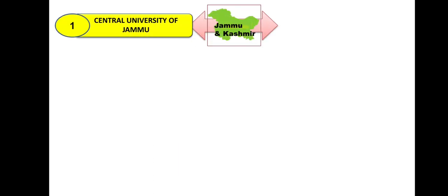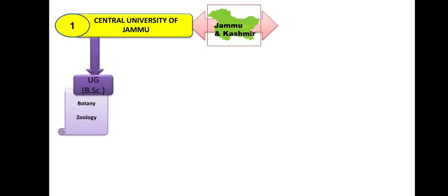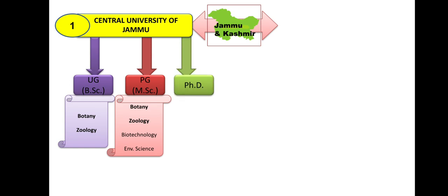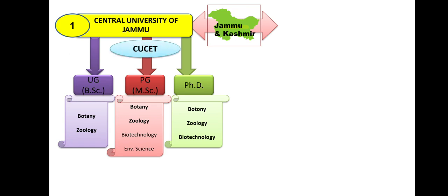Let's start with Jammu and Kashmir. There are two Central Universities in Jammu and Kashmir. In the Central University of Jammu, BSc (UG) is available in Botany and Zoology. In PG, Botany, Zoology, Biotechnology, and Environmental Science — four subjects have PG available. PhD is available in Botany, Zoology, and Biotechnology. Admission will be through CUCET — Central University Common Entrance Test. The website is given in the description box.